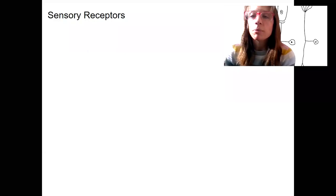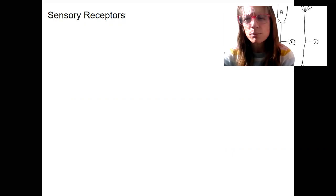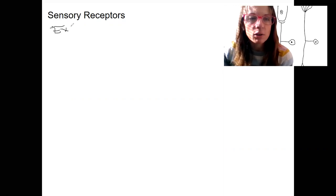So this gets really cool. There's different ways to categorize sensory receptors. There's two main ways I want to talk about. One we're going to start with is where the sensory receptors are located. So typically when we think of the senses, we think of external stimuli outside of the body. These are called exteroceptors.